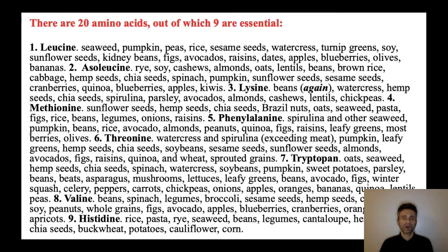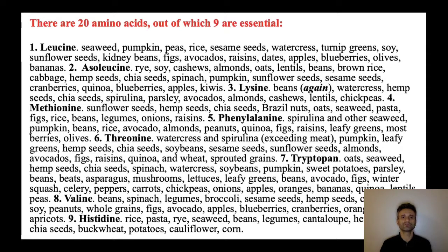This would be a good argument if and only if you could prove that there is a particular nutrient necessary for good health that cannot be found anywhere except in meat or animal products. Unfortunately for that argument, all essential nutrients, all essential amino acids, all essential fatty acids — everything required for good health — can be found in vegetables and plants.